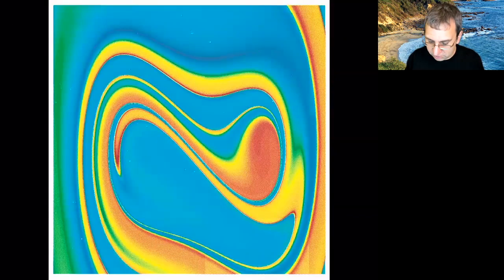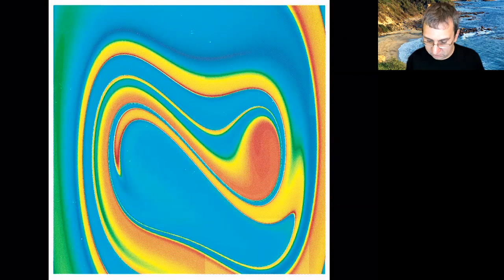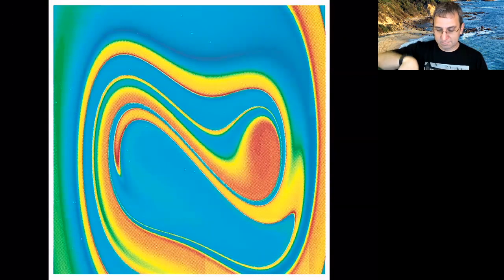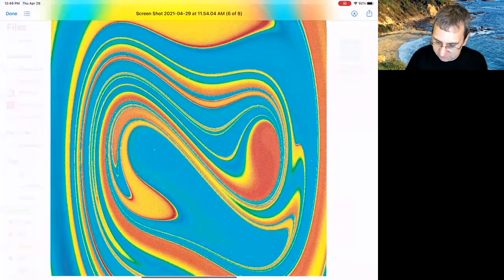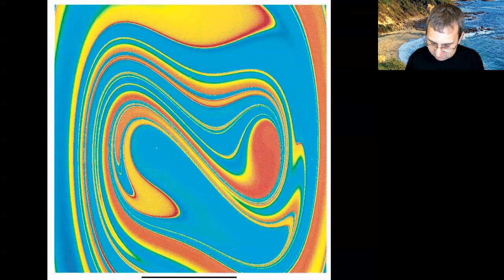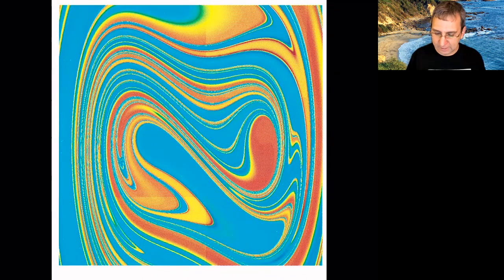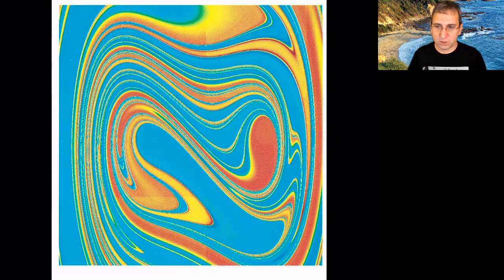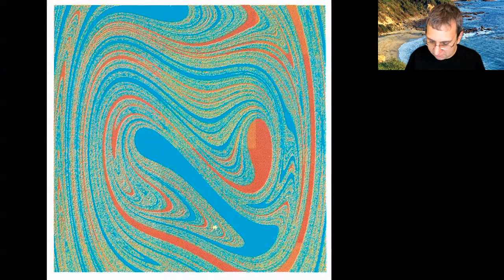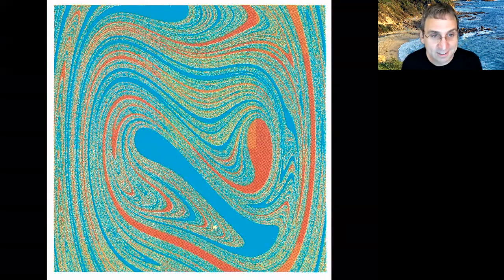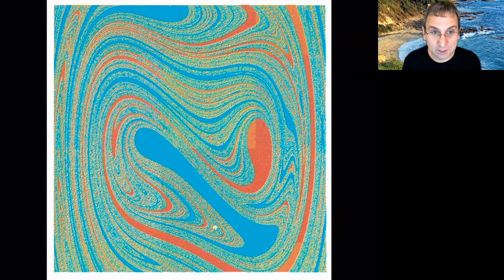So we're still doing forcing. This is after two periods. And you see what looks like stretching and folding. This is, I think, three periods, four periods. And it's the same sort of thing that we've seen. Stretching, folding, reinjection. And it will end up looking very complicated.